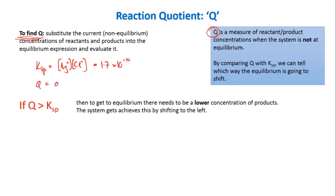When we evaluated Q, it was 0.02 times 0.4, which gave us 0.008. So in our case, Q is greater than Ksp.